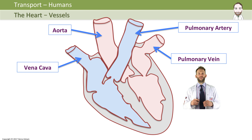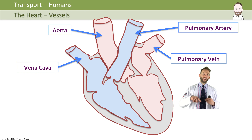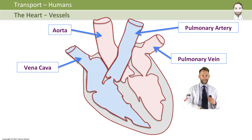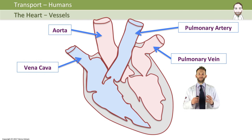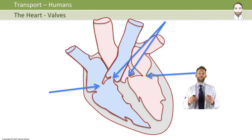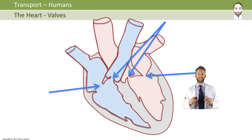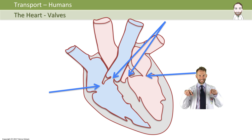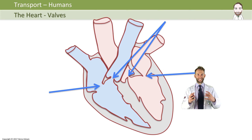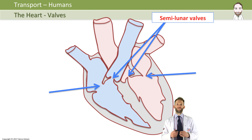Humans have a double circulatory system — there are two loops. Every circuit of the body, the blood actually passes through the heart twice. The blood goes into the heart, travels up to the lungs to get oxygen, returns to the heart, and then the heart pumps that oxygenated blood all the way around the body, before returning to the heart via the vena cava again. There are also valves in the major arteries — the pulmonary artery and the aorta — to stop blood draining back down when the heart is relaxing. These are called the semilunar valves.